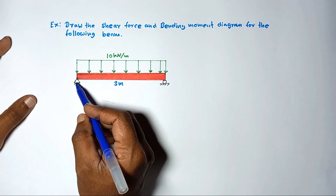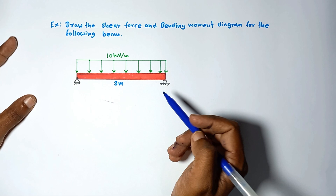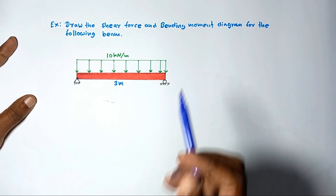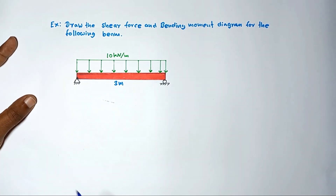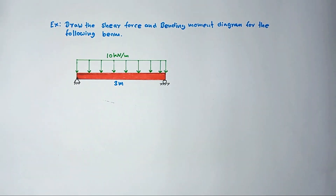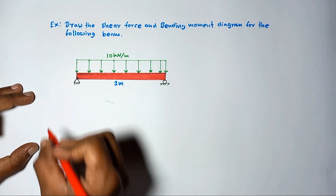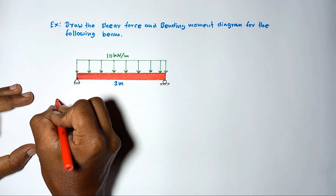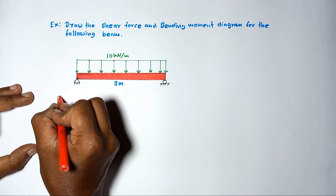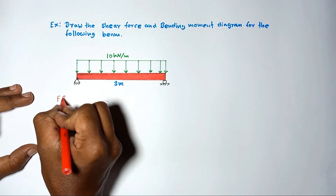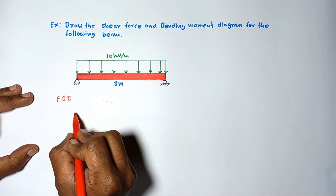Here the beam supports are shown. Support A is a roller support. When doing this kind of problem, the first step is to draw the free body diagram for the entire beam. Let me draw the free body diagram for the entire beam.